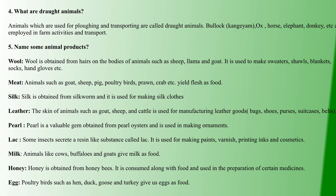Fifth question: name some animal products. First is wool — obtained from sheep, llama, and goat body hair. Wool is used to make sweaters, shoes, blankets, socks, and hand gloves.